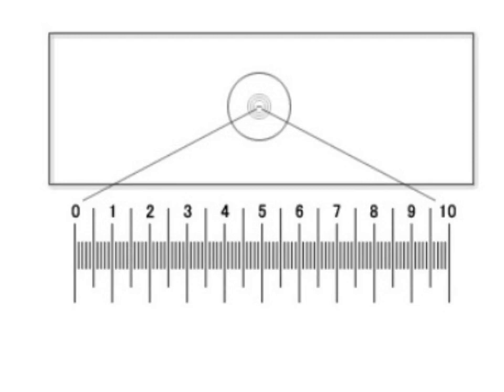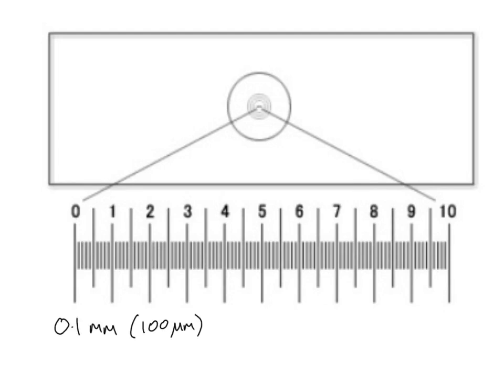The way we do that is we use a stage micrometer. A stage micrometer is basically a special ruler for a microscope — it's a glass slide you put on the stage, with a tiny scale in the middle. Like the graticule, it's a scale, but the difference is that we know exactly how far the distance is between each division. We know that 0.1 millimetres is the distance from one large division to the next, and each 0.1 millimetres is divided into 10 small divisions, so each small division is 0.01 millimetres, or 10 micrometres.